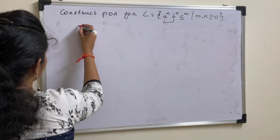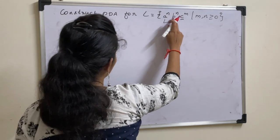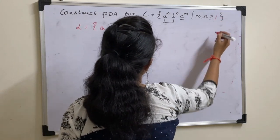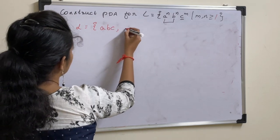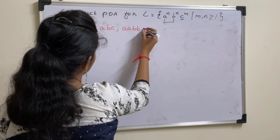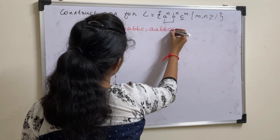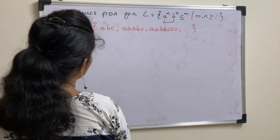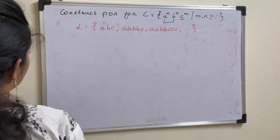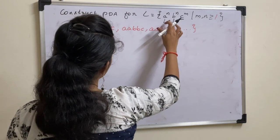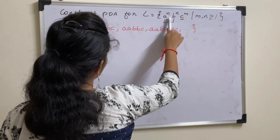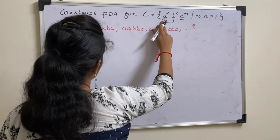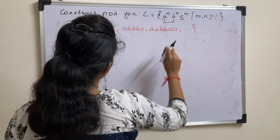How can we derive the language for this? We can have equal number of A's and B's. Taking N greater than or equal to 1, we get strings like ABC, AABBC, AABBCCC, and so on. Based on previous problems, the logic here is: since we have equal number of A's and B's, we perform a push operation for A, a pop operation for B, and for C, do nothing.